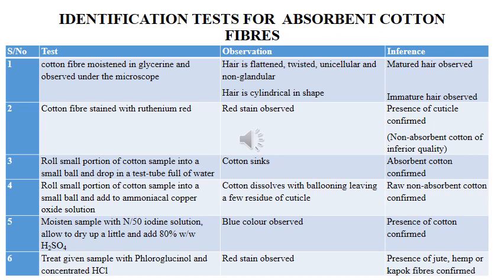Another test is to roll some cotton into a small ball and drop it into a test tube filled with water. If the cotton sinks, it means that what you have is an absorbent cotton — absorbent cotton is confirmed present.